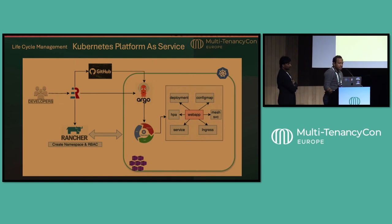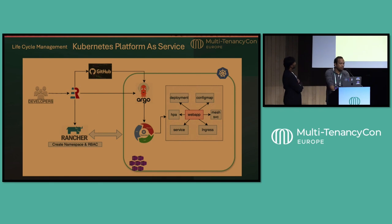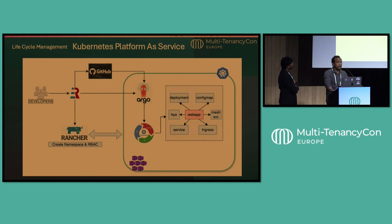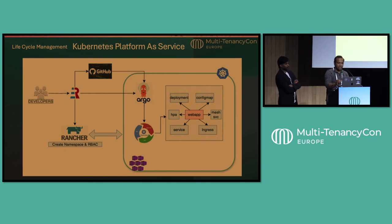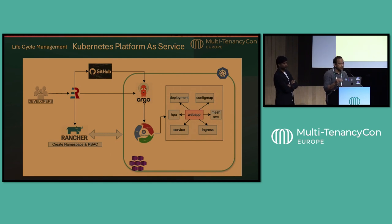Here's an example of the platform we built at American Airlines. Developers come to an intelligent developer portal called Runway, which is based on Backstage, where they can create a namespace in a specific cluster. That namespace has quotas and RBAC assigned to it. Once the namespace is created, they choose from templates and workload types, which creates a GitHub repo for them. The repo contains custom CRDs deployed based on user specifications, and Argo CD takes those GitHub manifest files and deploys them into the cluster.